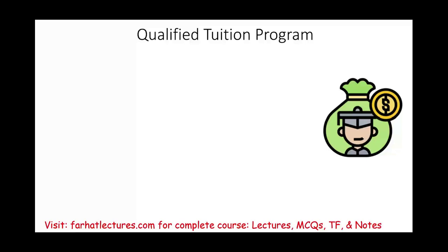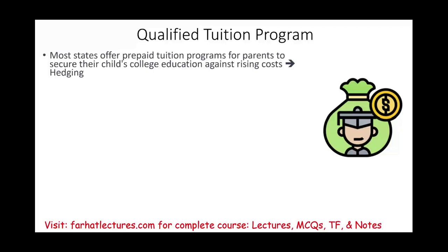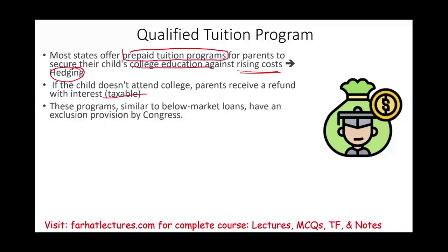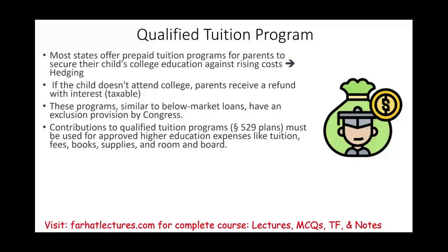Another incentive is the Qualified Tuition Program, offered by states — not the federal government. States offer prepaid tuition programs where parents can pay tuition now, locking in today's rates for when their kids attend school in 18 or 20 years, hedging against rising costs. If the child does not attend school and parents receive a refund, the interest portion of that refund is taxable. Contributions must be used for approved higher educational expenses such as fees, books, supplies, and room and board.